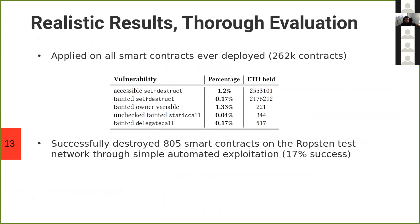We implemented eTainter using Datalog — more specifically, we use the Gigahorse framework, which is also a decompiler. We inherited many characteristics of this framework, such as speed and scalability of Gigahorse, and were able to apply our analysis on all smart contracts deployed at some point in time — block eight-point-something million. After removing duplicates, we were left with 262,000 contracts.